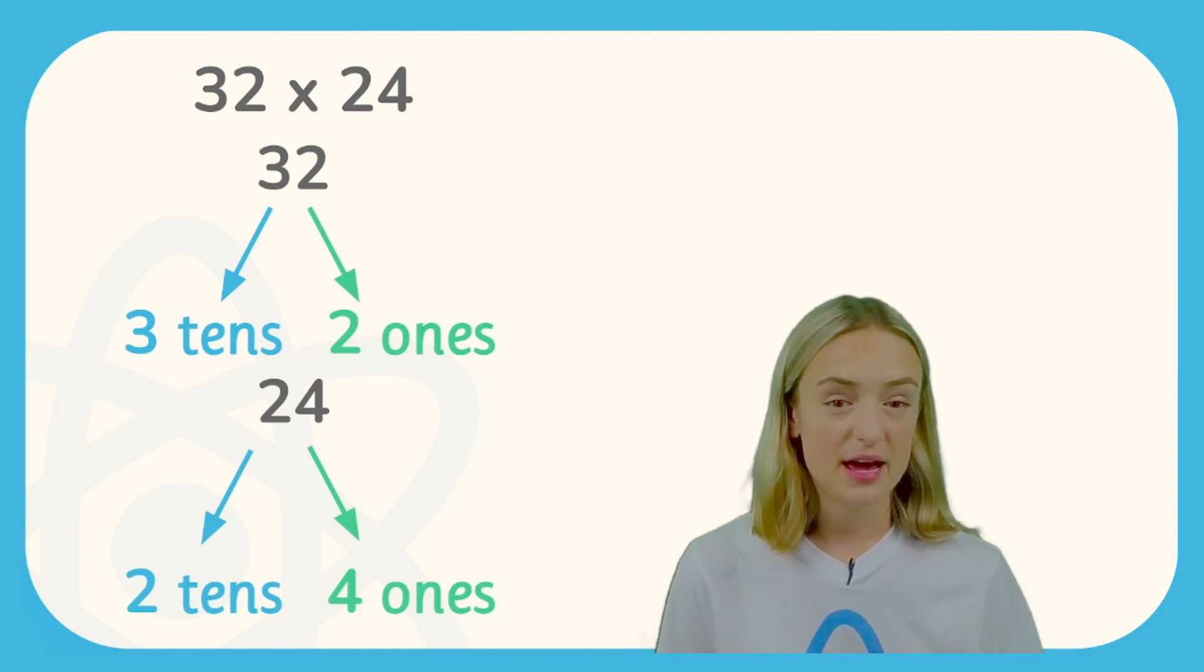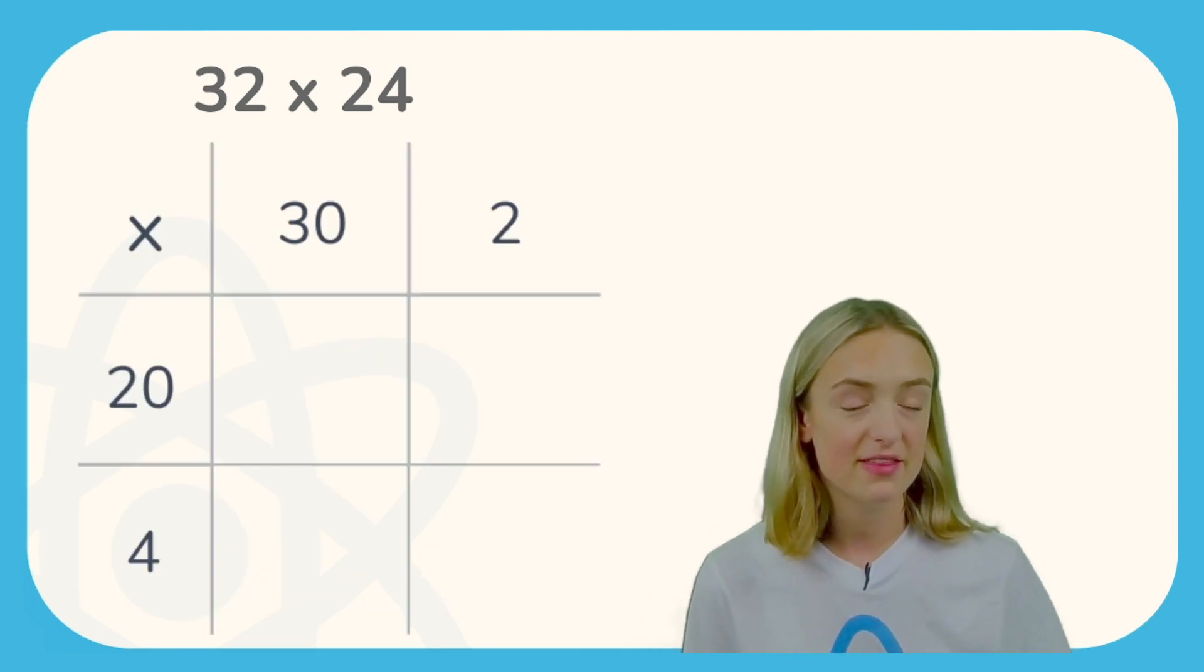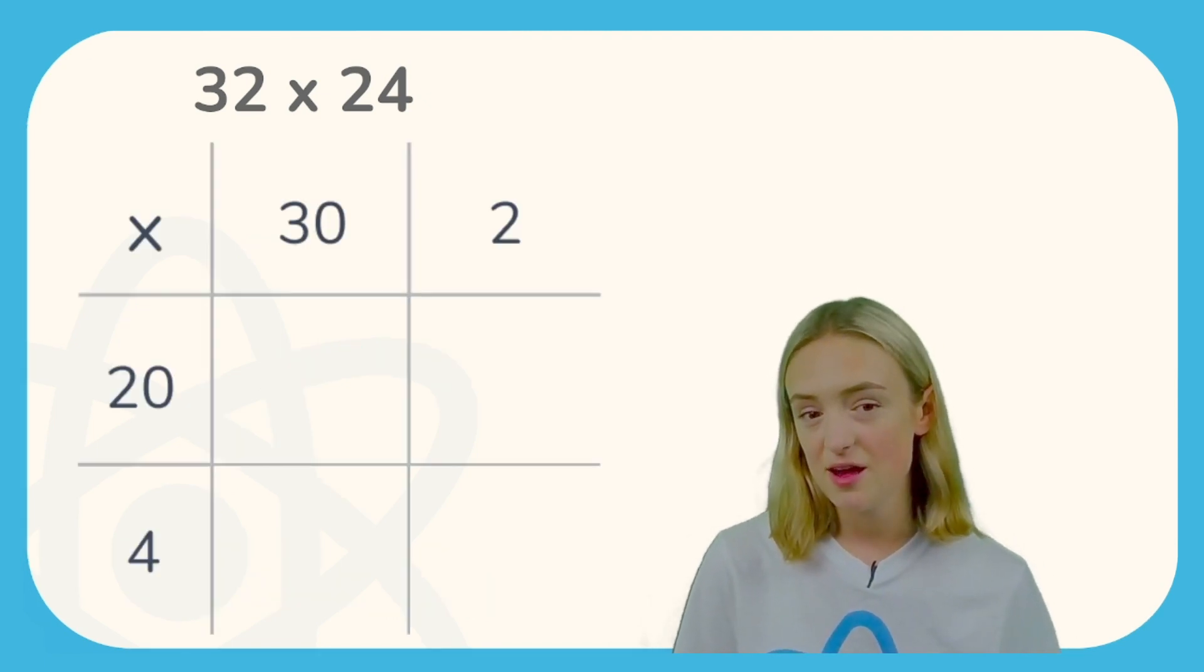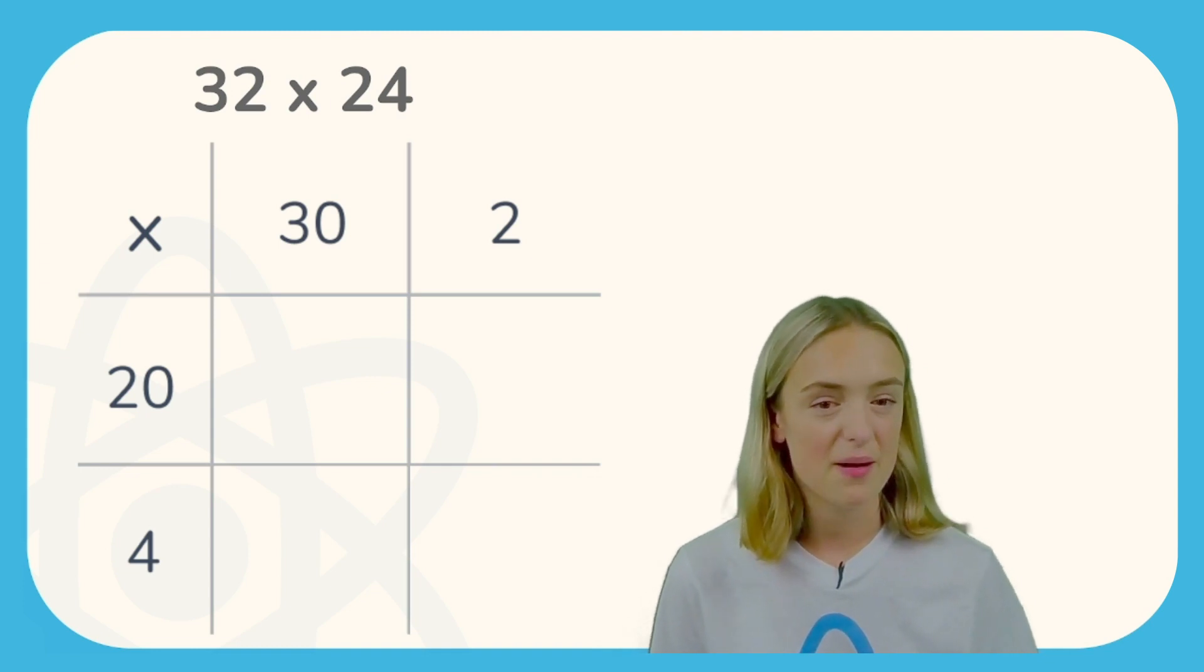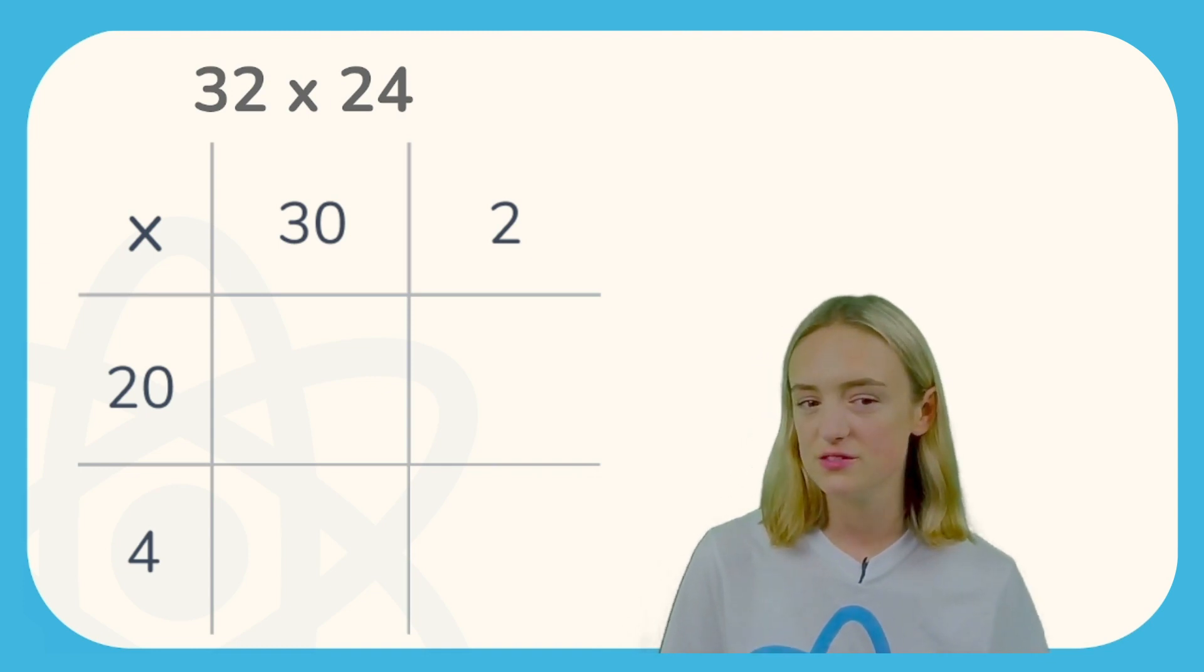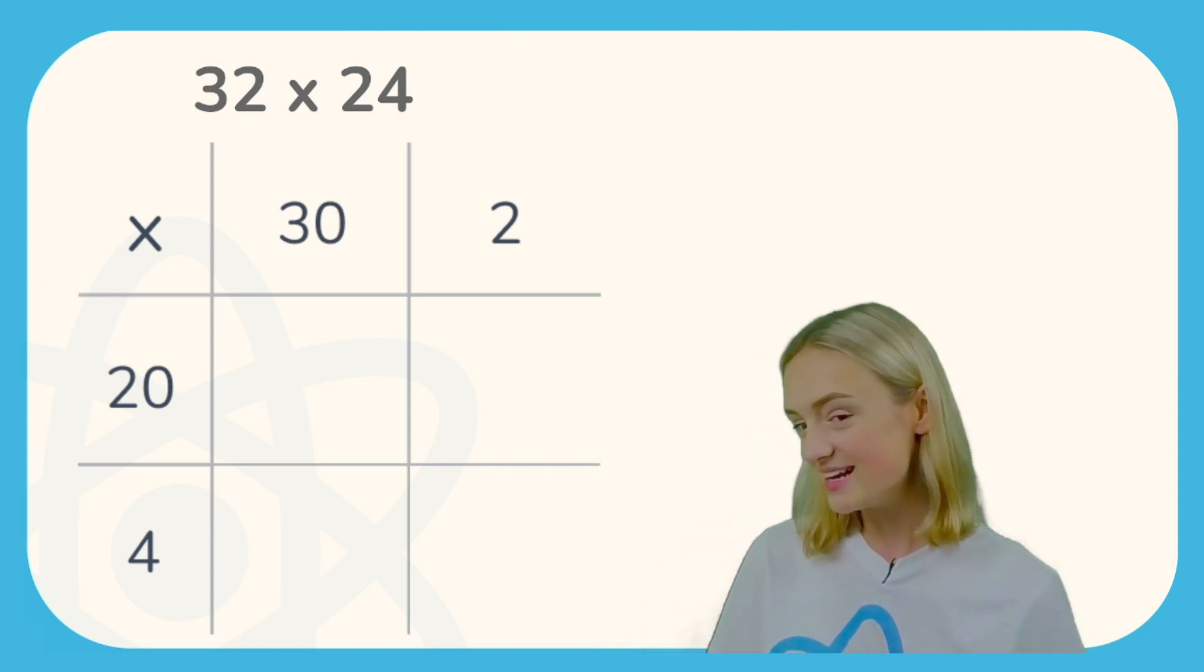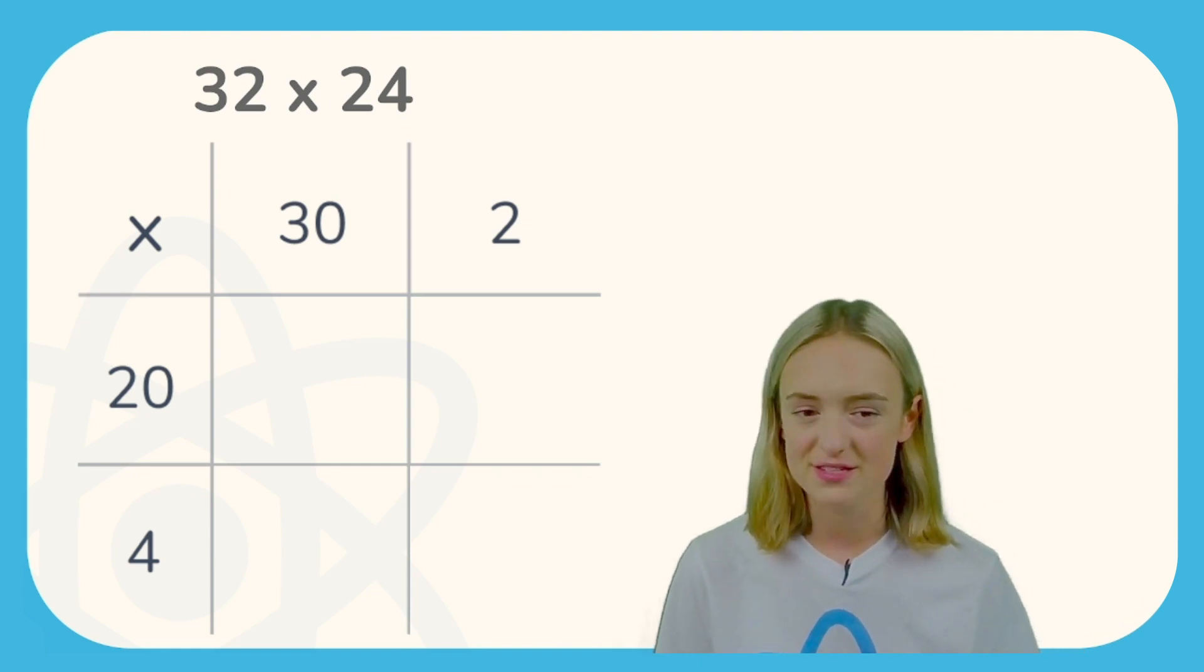Now next up we need to multiply the tens with the tens, the ones with the ones, and both of the tens with both of the ones. So we're going to use this handy table here to keep track of all of our answers, filling in as we go along.